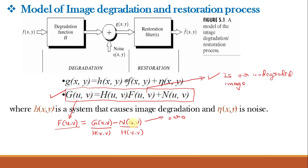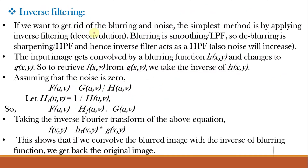However, if noise is not zero and H(u,v) is very small, then the term N(u,v)/H(u,v) tends to infinity, resulting in massive noise amplification. That is why inverse filtering is not a good choice for obtaining the undegraded image when noise is present. The simplest method to address blurring is inverse filtering or deconvolution — since blurring is low-pass filtering, deblurring is high-pass filtering.